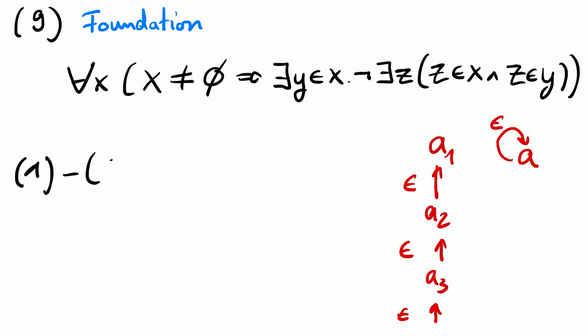The axioms 1 up to 9 is referred to as Zermelo-Fraenkel set theory, short ZF.